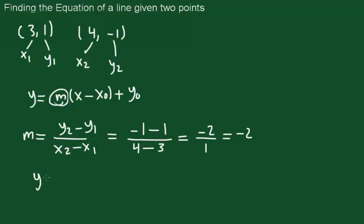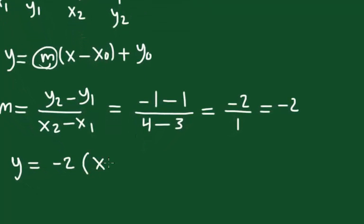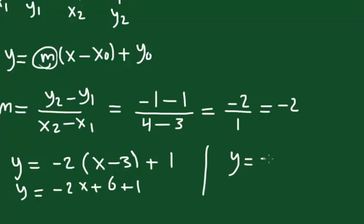So y equals -2(x minus 3). I'm taking this point. So y equals -2x plus 6, plus 1, y equals -2x plus 7. That's it.